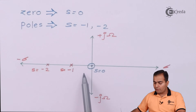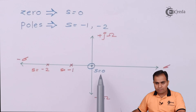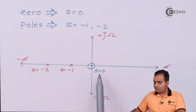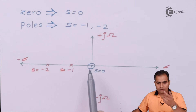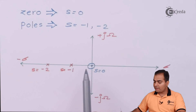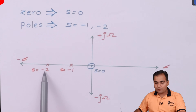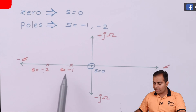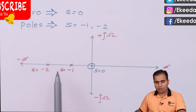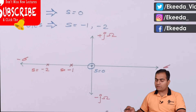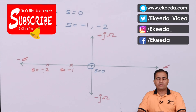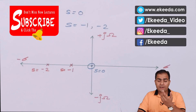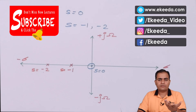The zero is represented by a circle, and the poles at -2 and -1 are represented by crosses. This is all about the pole-zero plot. We will study different numerical examples in future videos.